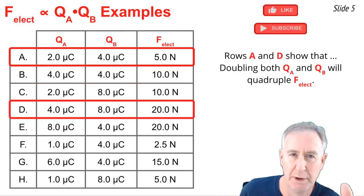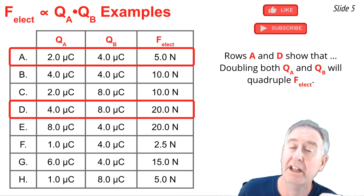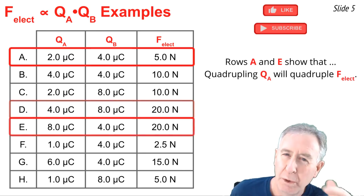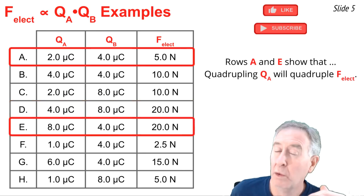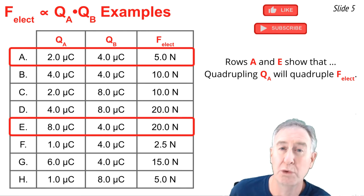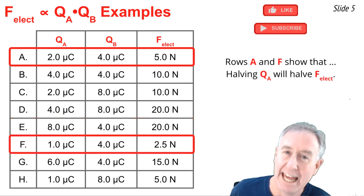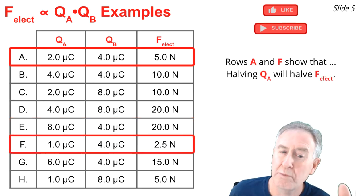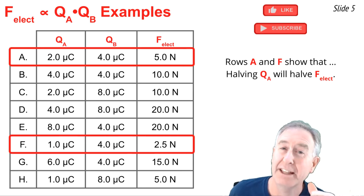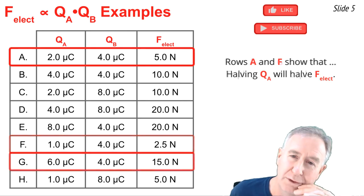Rows A and D show that if both the QA value were doubled and the QB value were doubled, then the electric force value would quadruple from 5 newtons to 20 newtons. Rows A and E show that the quadrupling of QA causes the electric force to quadruple as well, from 5 to 20 newtons. Rows A and F show that if that 2 microcoulombs QA value were halved to 1 microcoulomb, then the electric force value would halve from 5 newtons to 2.5 newtons.